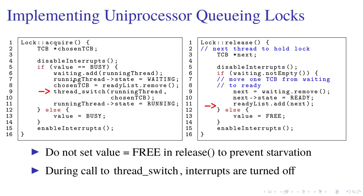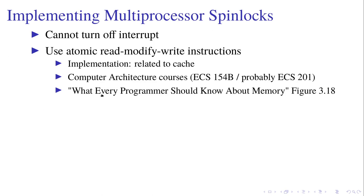Also, when we are calling the thread switch, the interrupts are turned off so that there will be no race condition. To implement multiprocessor spin locks, we cannot turn off the interrupt because in multiprocessors, if you turn off the interrupt, other CPUs will still change the memory. So we are going to use atomic read-modify-write instructions. Its implementation is related to cache and it's out of the operating systems scope.